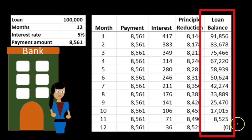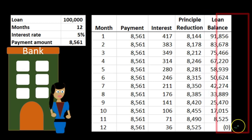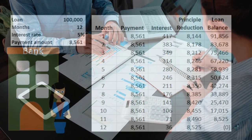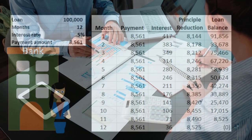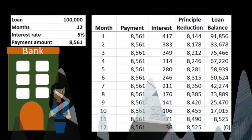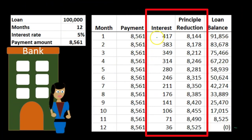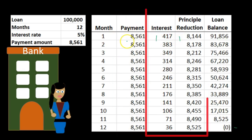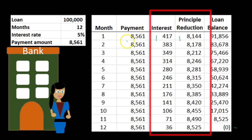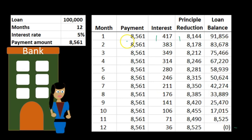If we repeat this process 12 times, we can see that we would finally get down to zero at the end. This gives us a lot more information. If we're looking at something like a 30-year loan, it's helpful to know in year one how much interest we'll be paying as opposed to principal — especially since interest is deductible for taxes, while the principal is not.